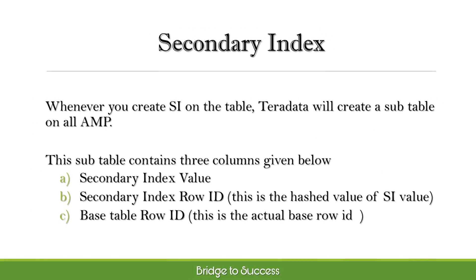Whenever you create an SI on a table, Teradata will create a subtable on all AMPs. This subtable contains three columns: secondary index value, secondary index row ID (which is the hashed value of the SI value), and base table row ID (which is the actual base row ID).